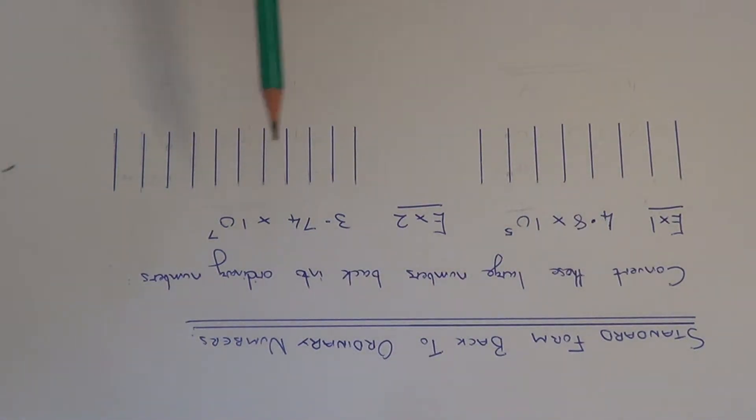Today I'm going to show you how to convert a number written down in standard index form when the powers are positive back to an ordinary number. So let's have a look at example 1.